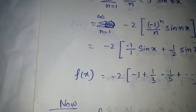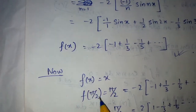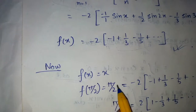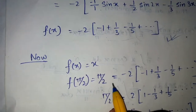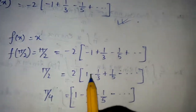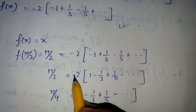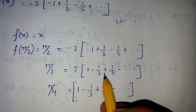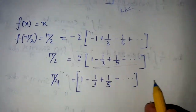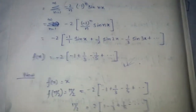But our question asks us to deduce that the series equals pi by 4. To do this, we substitute x = pi/2 into both sides. Since f(x) = x, f(pi/2) = pi/2. After substitution and taking minus one as a common factor, the series becomes 1 minus 1/3 plus 1/5 minus ..., and the right-hand side becomes pi/4. This is proved.